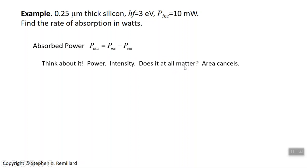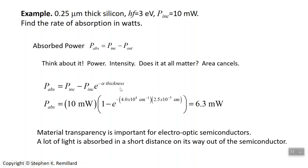It works for all of them. Using that as our expression, the power coming out is the power going in times e to the minus alpha times the thickness. We have all these numbers; the alpha you get from that table on page 120 and the thickness is given. So then we know that the power absorbed is 6.3 milliwatts.